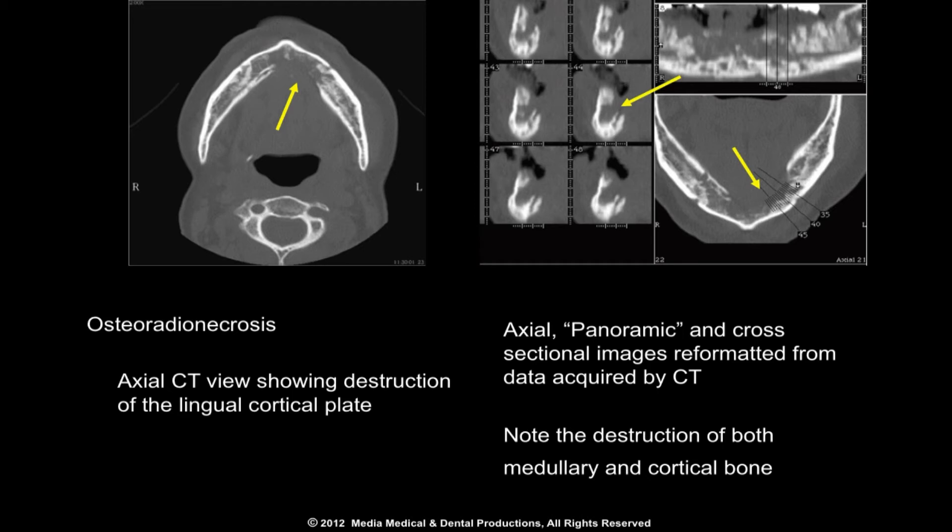Radiographs show an ill-defined mixed radiolucent-radiopaque lesion to an almost completely radiolucent lesion involving a significant area of the jaw. In these images of the previous patient, note the destruction of both medullary and cortical bone. A diagnosis of osteoradionecrosis is not difficult when the patient reports a history of radiation therapy directed to the head and neck region.